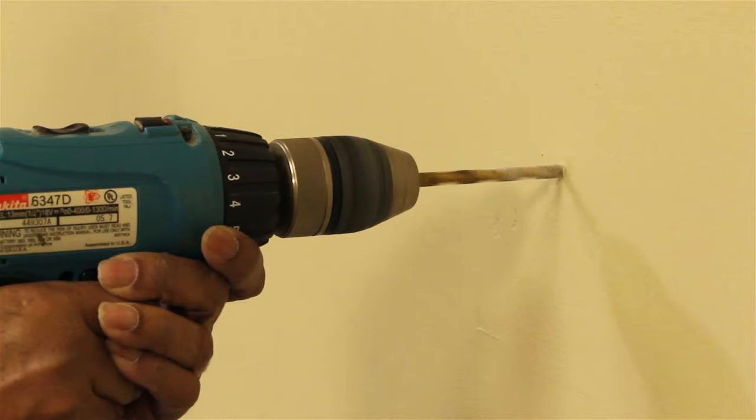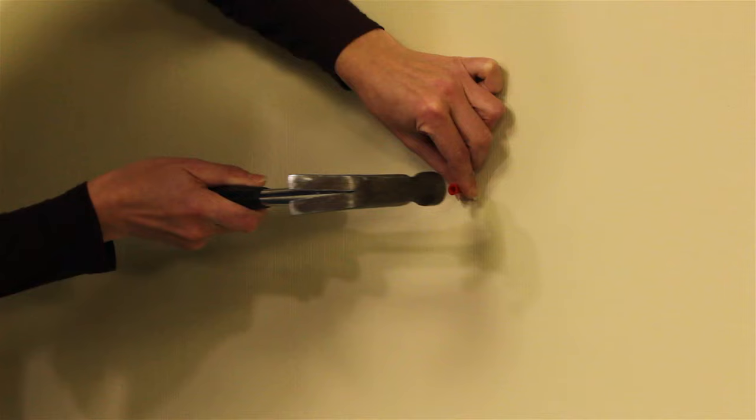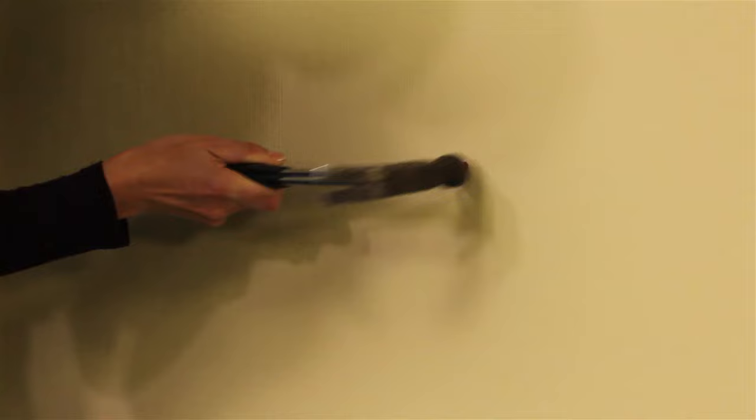Drill holes using a 1¼ inch drill bit on the marks made at the top of the clip slots. Then tap the supplied anchors into the holes drilled.